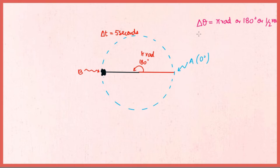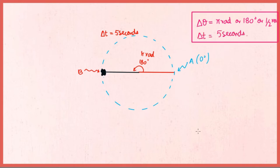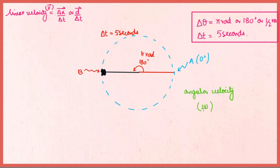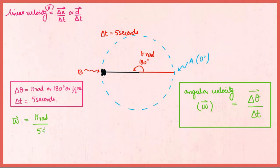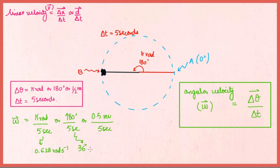The total time taken is 5 seconds. Like linear velocity, which is delta x over delta t, angular velocity — represented by the Greek symbol omega — is the angular displacement over total time taken. In this case, omega equals delta theta over delta t, which is pi radians over 5 seconds, or 180 degrees over 5 seconds, giving 0.628 radians per second, or 36 degrees per second, or 0.1 revolutions per second.